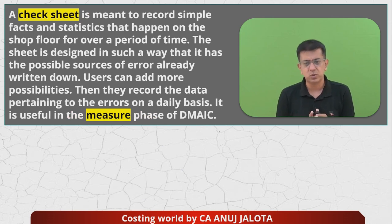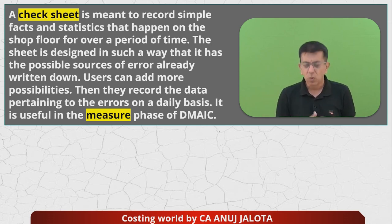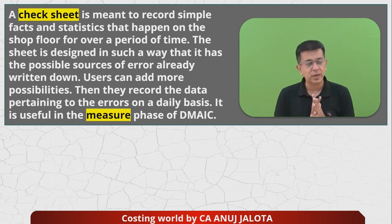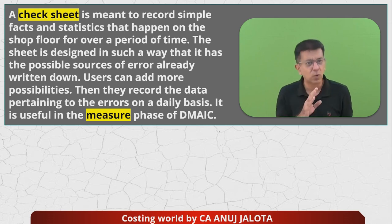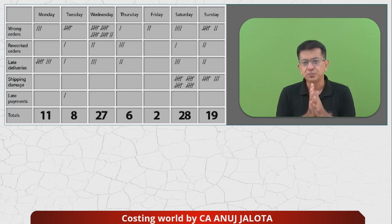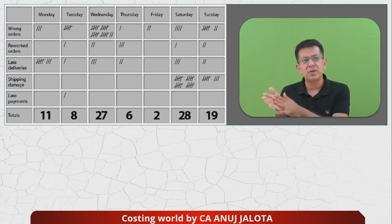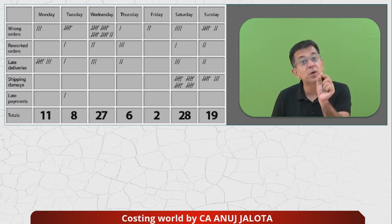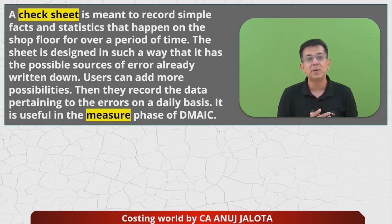Project Charter is in the defining stage. Now, Check Sheet — in real life, a check sheet is used while work is being done and you want to measure how many errors were made. For example, in a factory you want to measure how many units are defective. You can record tally marks: say three wrong orders on Monday, eight late deliveries, and so on. This is a measuring tool, so it belongs to the measuring stage, not the defining stage.